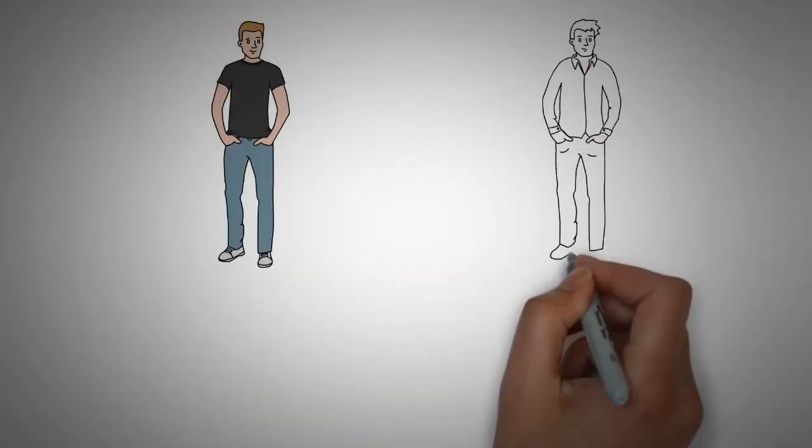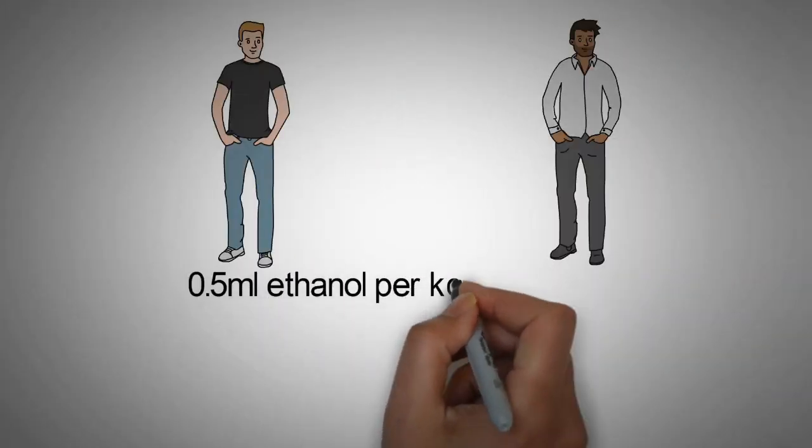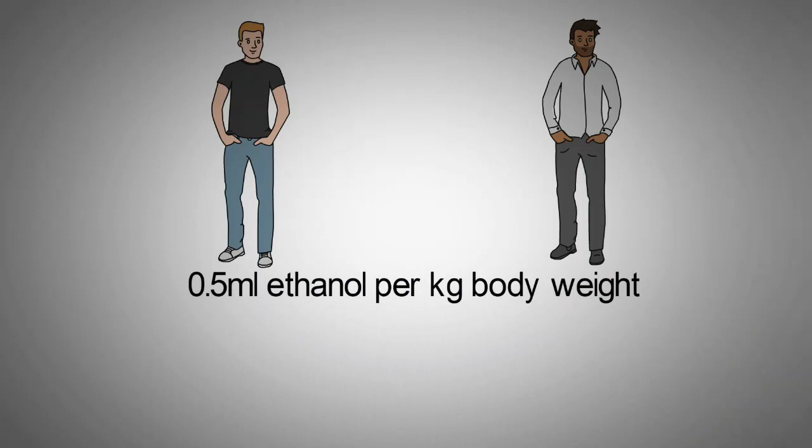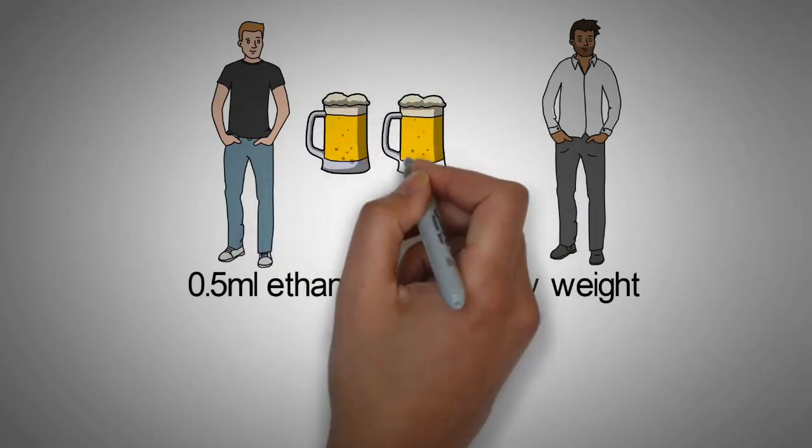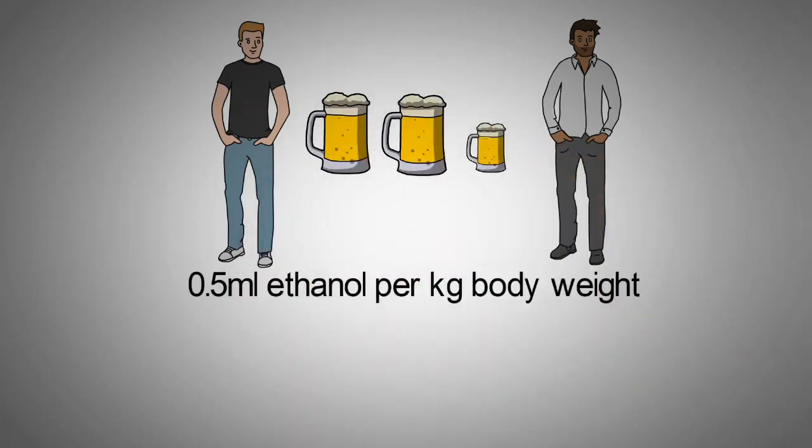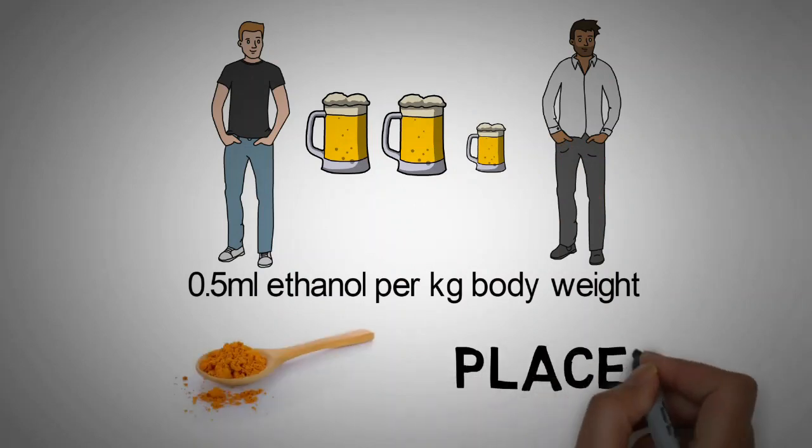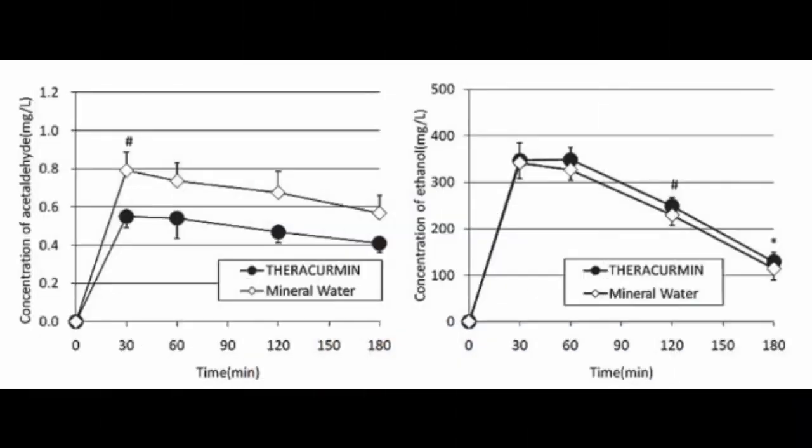Volunteers were asked to consume 0.5ml ethanol per kilogram body weight, which is the equivalent to about 2.5 beers for a person of my size, and either consumed 30mg of curcumin or a placebo. The scientists found that the blood acetaldehyde concentrations were significantly lower in the groups that also consumed the curcumin.